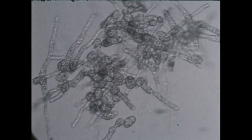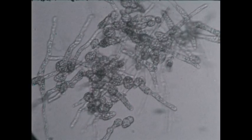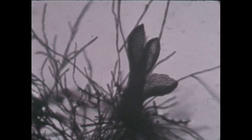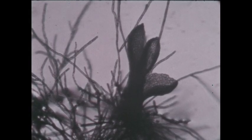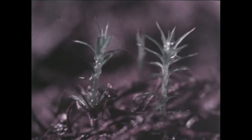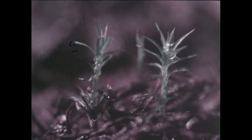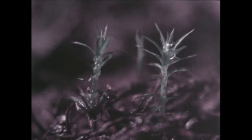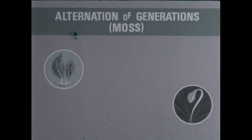Spores that fall, or are blown onto damp shaded soil, germinate. They begin to grow into new young moss plants — not into new sporophytes, but into leafy gametophytes. When these gametophytes mature, they will in turn give rise to new sporophytes. The cycle continues over and over, and is known as alternation of generations.